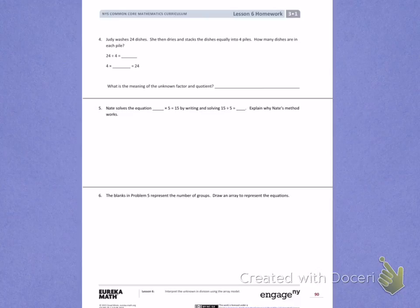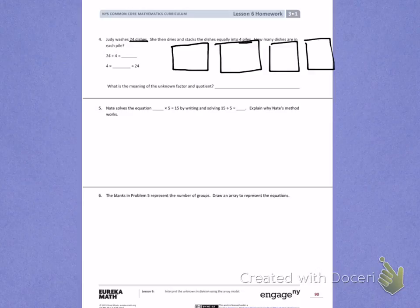So Judy has a total of 24 dishes. She makes 4 equal groups of piles. So she has 1 pile, 2 piles, 3 piles, and 4 piles. I'm going to divide up those 24 dishes into the 4 piles.